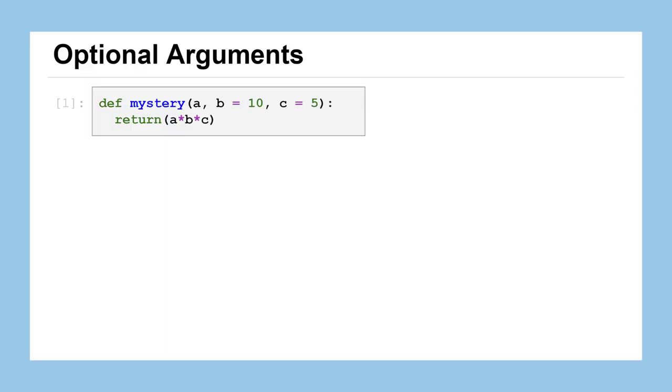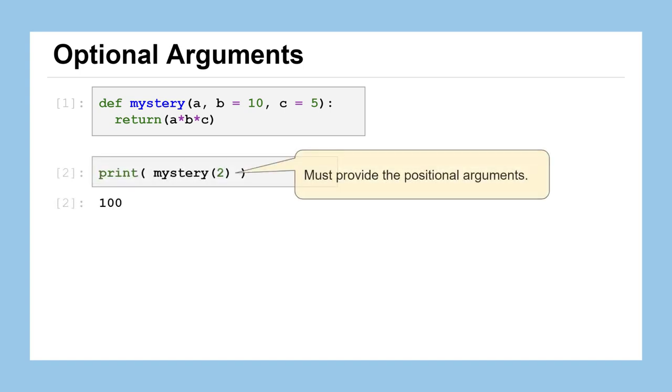Here's a function that we've defined to have the name mystery. But if you look at the return statement, it's probably not that mysterious what it does. It just finds the product of a, b, and c. But what you can see has provided three different parameters, a, b, and c. a is just a simple positional parameter. It doesn't have any default value assigned to it. But b and c do have some default values assigned of 10 and 5. By the way, these are also called keyword arguments because we will see in a moment you can refer to them by their names later on.